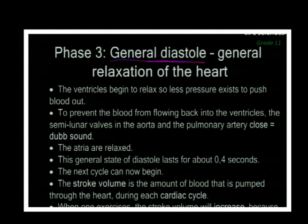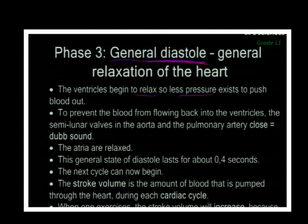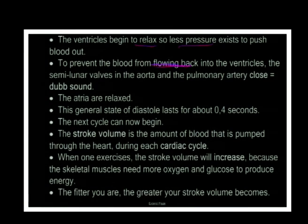The cardiac cycle timing: atrial systole = 0.1 seconds, ventricular systole = 0.3 seconds, and general diastole = 0.4 seconds - the whole heart relaxes. So 50% of the time the heart is contracting and 50% it is relaxed. During general diastole, semi-lunar valves in the aorta and pulmonary artery prevent backflow of blood into the ventricles.